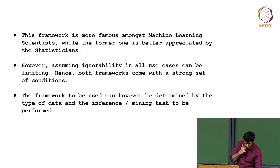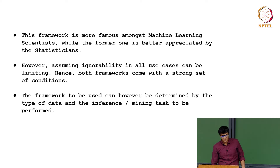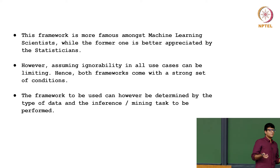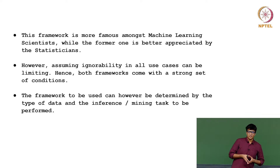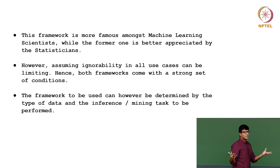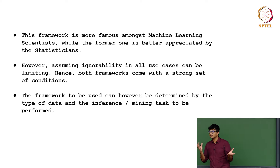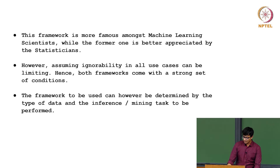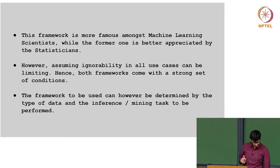The potential outcomes framework is relatively simple to work with and is more famous amongst machine learning scientists, while the Perlian framework is better appreciated by statisticians. Assuming ignorability in all cases can be limiting and both frameworks come with a strong set of assumptions. Maybe it would be interesting to find a bridge between the two, so you don't require the entire causal graph but also don't need to assume strong ignorability — you can get the set Z and condition only on those sets.